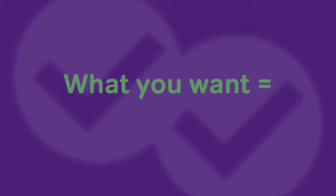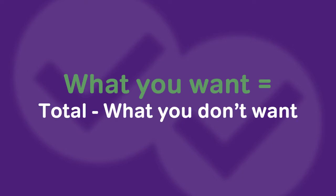Probability, permutations, and combinations are going to show up at about the same frequency no matter what level you're performing at on the test. What changes with your difficulty level is the complexity of those questions. Now oftentimes with these more complex problems there are so many moving pieces, so many things to separately solve for, that solving for all of them and combining them to get the total is unrealistic in the scope of two minutes. So on a problem where you're finding it's particularly complex to solve directly for what you want, instead consider solving for what you don't want and subtracting it from the total.